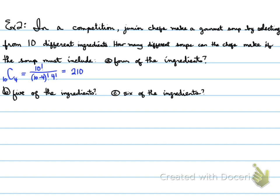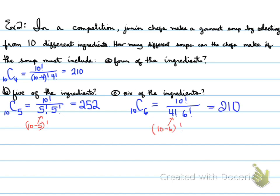Let's try 5 of the ingredients. That's 10 choose 5, which is 10 factorial over 5 factorial over 5 factorial. The first 5 is 10 minus 5, and this 5 has to do with the R. Now we have 252 different ways to make that soup with 5 different ingredients. 6 different ingredients: 10 choose 6 gives us 10 factorial over 4 factorial times 6 factorial, which is 210.